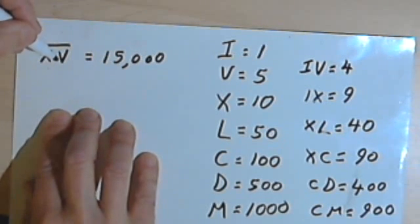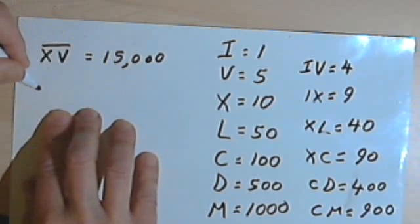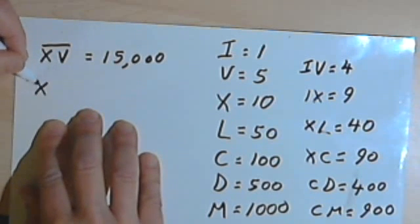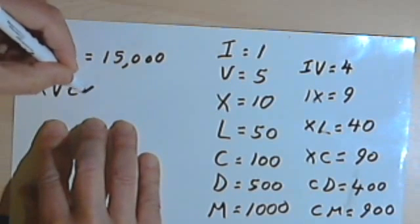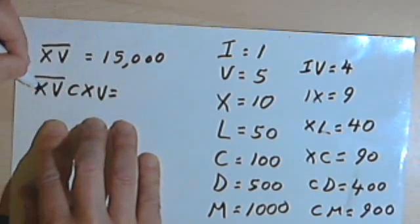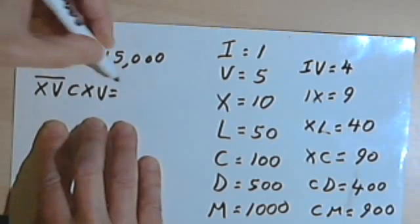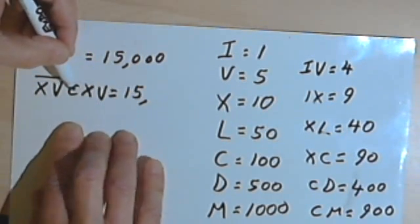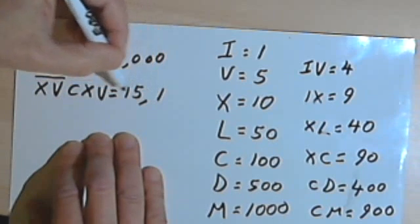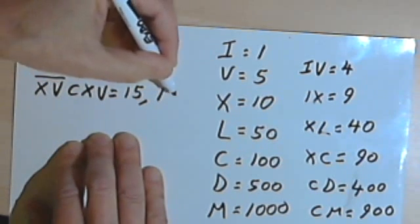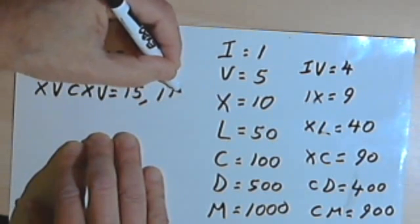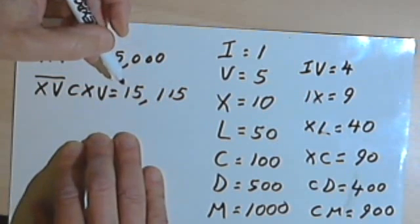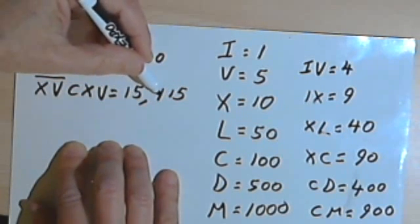I can combine this with regular numbers or regular Roman numerals. So I could have XV with a bar over it and then CXV. So the XV with a bar is 15,000, and then the CXV would be C is 100, and this last XV would be 15. So I've got 15,115.